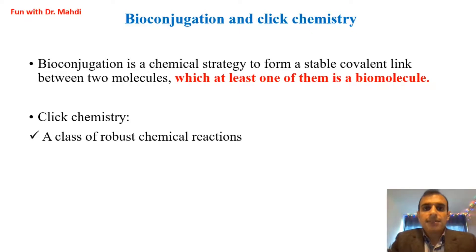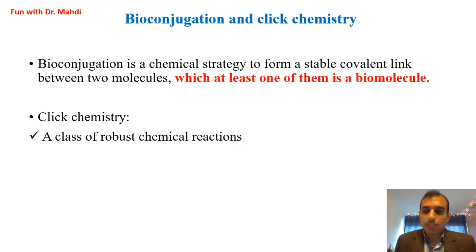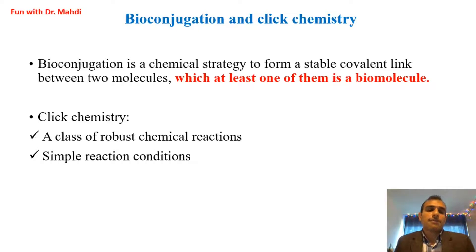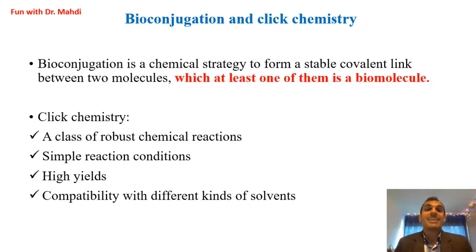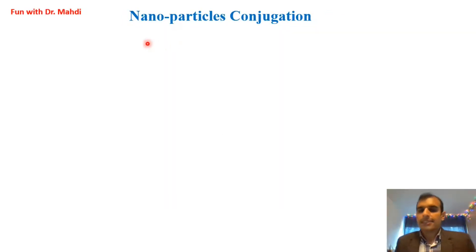But why click chemistry? Click chemistry is a class of robust chemical reactions. If you are looking for a very robust bond, it is better to use a click reaction. Click chemistry also has some more advantages, for example simple reaction conditions, high yield, and compatibility with different kinds of solvents — especially water. That's why we want to use click chemistry for bioconjugation.